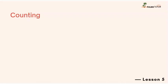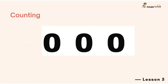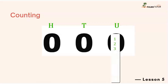We start counting from zero units, and zero means nothing — so there is nothing to write. Then gradually this increases and becomes one, two, three, four, five, six, seven, eight, nine. Nine is the highest number that can be in a place because we can't have ten there — ten is a two-digit number. Only one digit can stay in a place at a time.